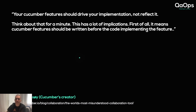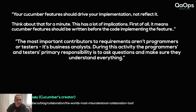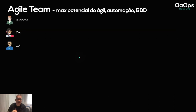Going back to Aslak: 'Your Cucumber feature should drive your implementation, not reflect it.' Think about that for a minute. It means Cucumber features should be written before the code implementing the feature. Also, the most important contributors to requirements aren't programmers or testers — it's business analysts. During this activity, the programmers' and testers' primary responsibility is to ask questions and make sure they understand everything. This leads to the concept of the Three Amigos — three friends: the business person, the dev person, and the QA person.